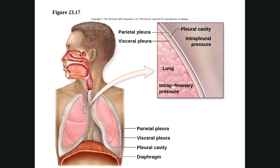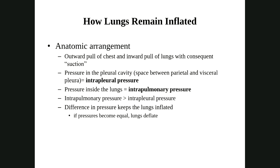If we introduce air into the intrapleural space, the intrapleural pressure is going to rise and we lose the suction — as a result, the lungs are going to collapse. So if something punctures through the skin and chest wall into the intrapleural space, we're going to have atelectasis — a collapsed lung. The key is that intrapleural pressure must be lower than intrapulmonary pressure in order to remain inflated.